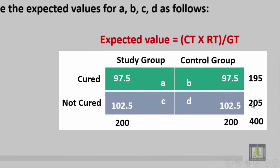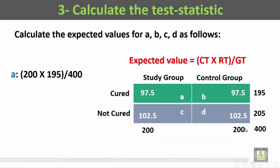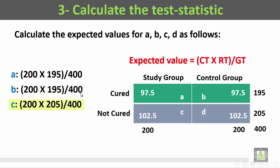In summary: A equals 200 times 195 divided by 400; B equals 200 times 195 divided by 400; C is calculated by multiplying 200 times 205 divided by 400; and D is calculated by multiplying 200 by 205 divided by 400.